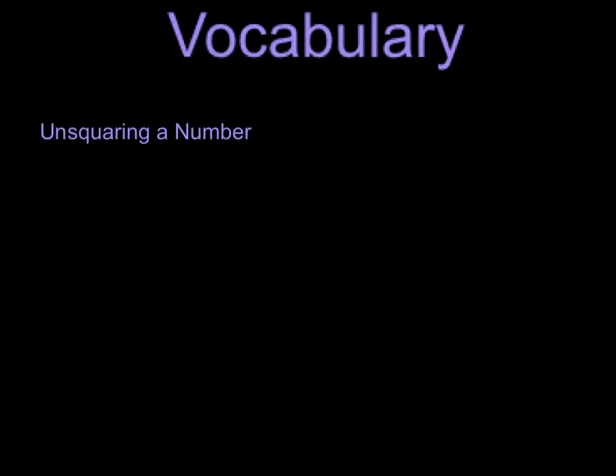Unsquaring a number means undoing the operation that was done to find the answer. This means doing the opposite of that operation.